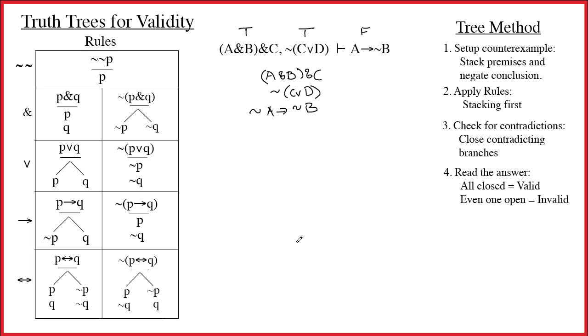Have I just successfully negated the conclusion? No, I haven't. What's the important mistake? You've got to put in parentheses so that the tilde applies to the whole thing. All right, let's put a line under it to show that this is our setup. Premise is true, conclusion false. Now we're going to construct the tree and see if this makes sense.